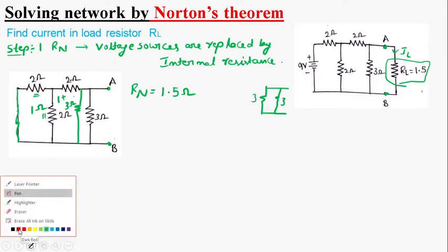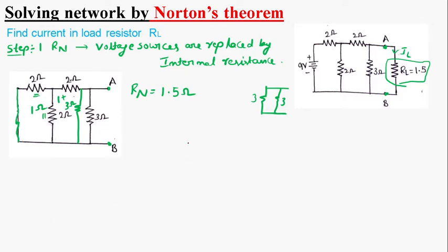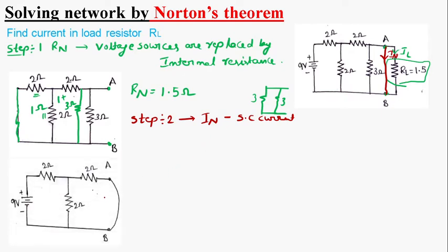In step 2, we have to find IN, the Norton current. IN is the short circuit current — that is, the current flowing through the short circuit. By removing the load resistance RL and redrawing the circuit, the circuit will be like this.